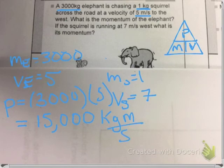15,000 kilogram meters per second. And now that we've finished the elephant, let's go ahead and talk about the squirrel. So we're going to do the same thing again. We're going to multiply our mass times the velocity. So how would that look like?